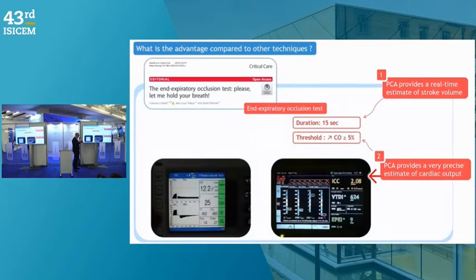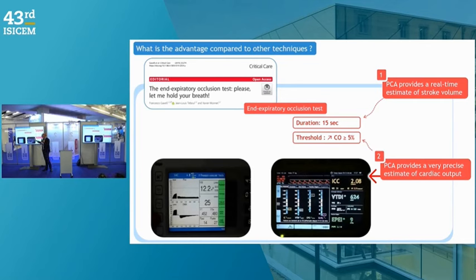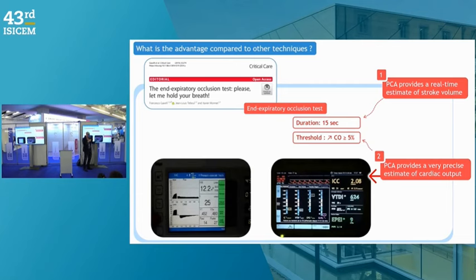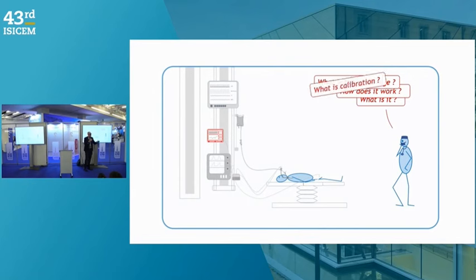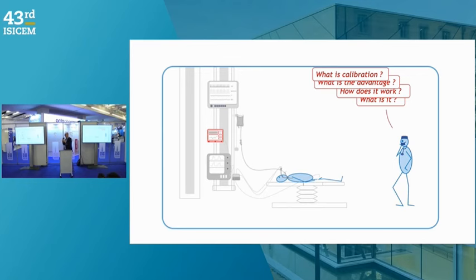We'll discuss preload responsiveness assessment with Professor Mayatra at 11 o'clock. The continuous cardiac index display is important because the end-expiratory occlusion test lasts only 15 seconds and requires a very rapid, precise measurement — the diagnostic threshold is five percent. Similarly for a fluid challenge lasting 15 minutes, you want to detect even small changes. These are the advantages of pulse wave analysis.